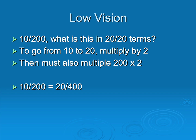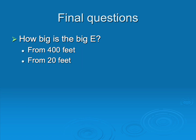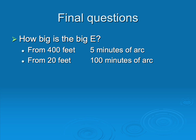For low vision, if given 10/200, convert to 20-foot terms: 10 times 2 is 20, and 200 times 2 is 400, so that's 20/400. If asked how big the big E is from 400 feet, the vision is 400/400 and those letters are 5 minutes of arc. From 20 feet, with the big E being 20/400, divide 20 by 4 to get to 5, and divide 400 by 4 to get 100 — so the big E subtends 100 minutes of arc from 20 feet.